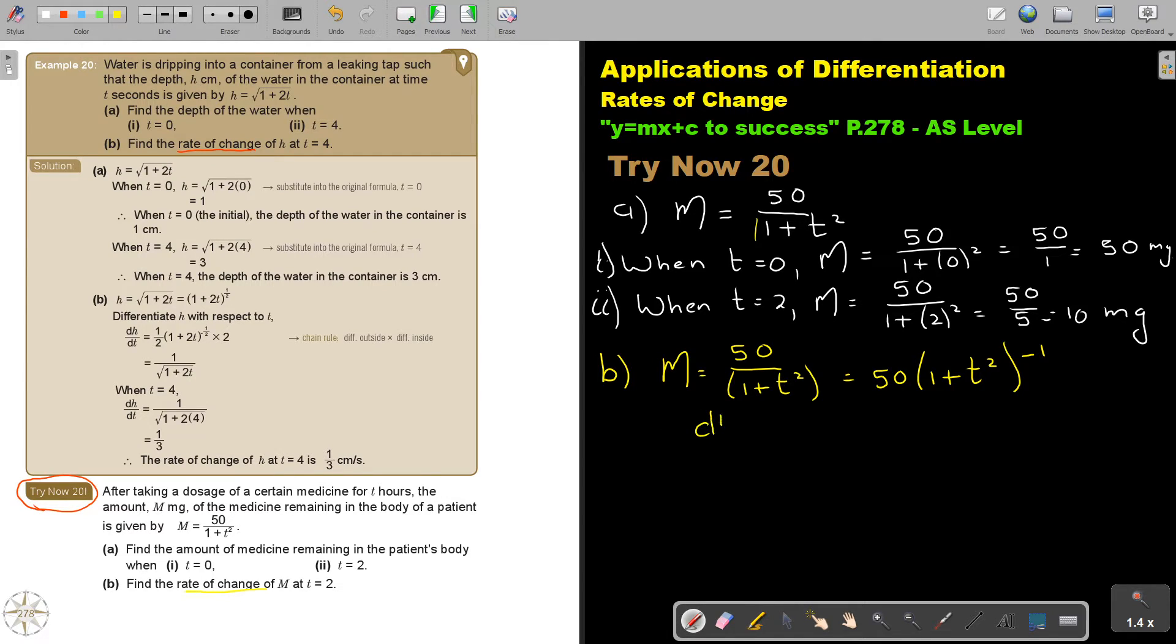Let's follow the short way again. So dm/dt. Differentiate first the outside. 50 multiply by negative 1 is negative 50. Subtract 1, so I get negative 2. And multiply by the inside. If I differentiate this, I get 2t. The bracket, the inside. If I multiply this, this will be negative 100t. And now I bring it down, and that's to the power of 2.